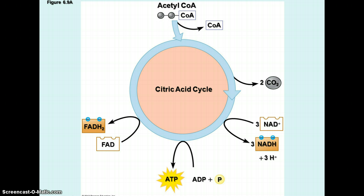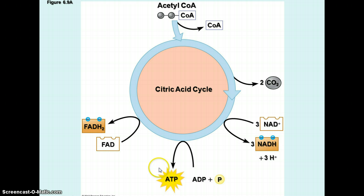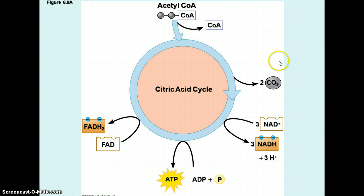Along the way, each molecule of pyruvate produces first one molecule of carbon dioxide, then two more carbon dioxide through the cycle, three NADHs, one ATP, and two FADH2s. So for each molecule of glucose, which produces two pyruvates, we have a total of six molecules of carbon dioxide, six molecules of NADH, two ATPs, and two FADH2s.